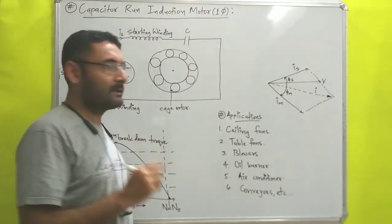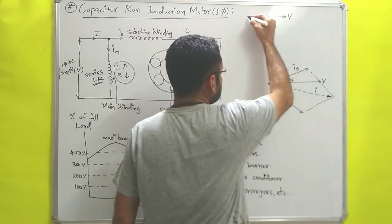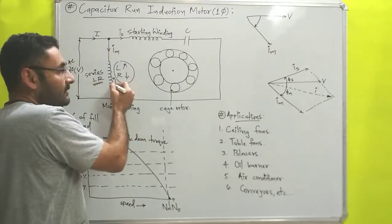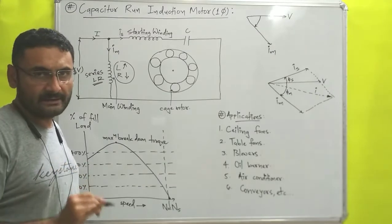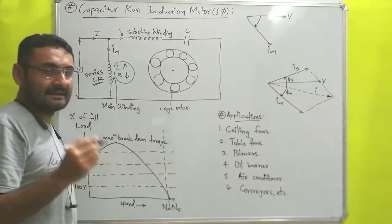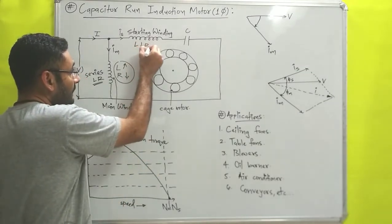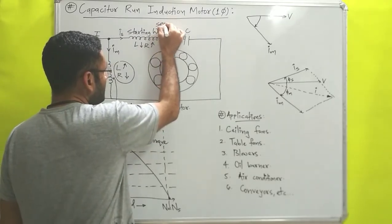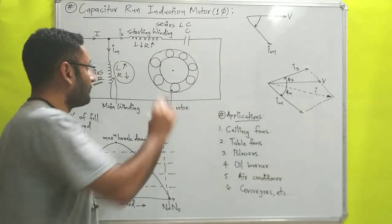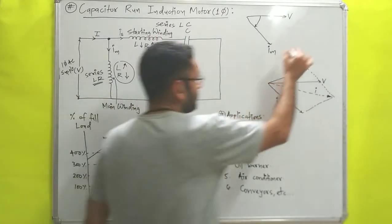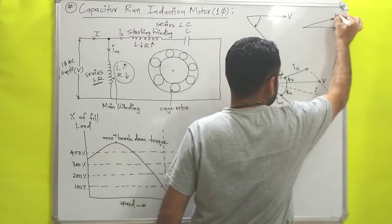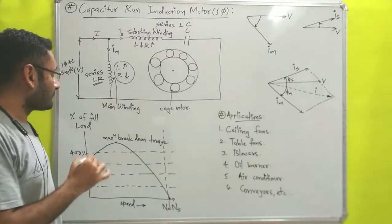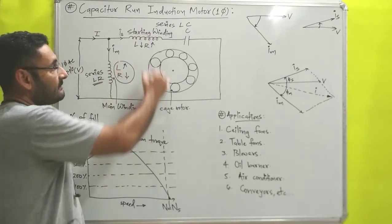For a series LR circuit, the current Im lags behind the voltage. Similarly, the starting winding is designed to have low inductance but high resistance, and it is connected in series with a capacitor, making that branch a series LC circuit. For a series LC circuit, the current Is leads the voltage by some phase angle. Importantly, that capacitor is not connected with a centrifugal switch — that is the key difference in this motor's construction.